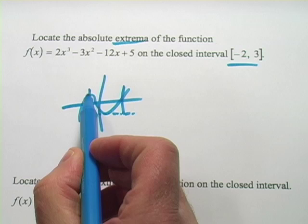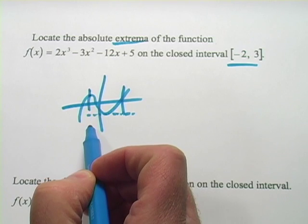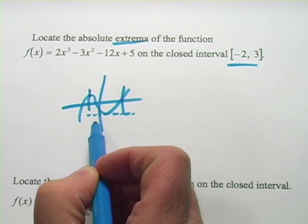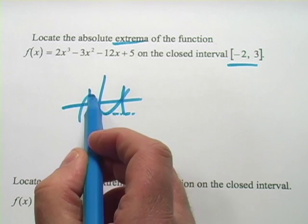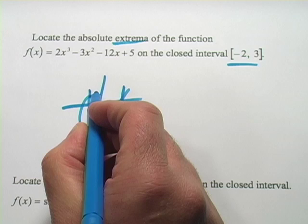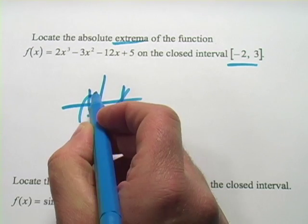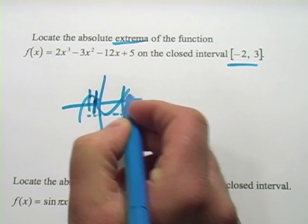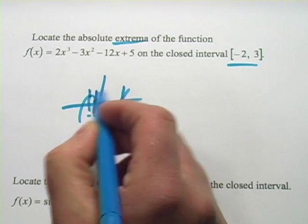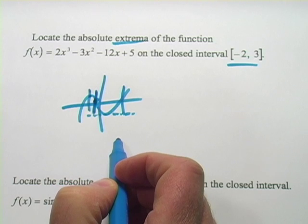You could also have a situation where one of those points falls right on the interval. In this case I've drawn it so it looks like that's a max there too where the slope is zero, but it might not be. What if we had done from negative one to three? This point might be the high point of that interval, even though it's not going to be a zero of the derivative.